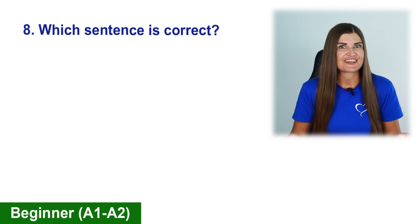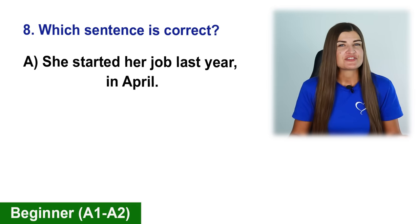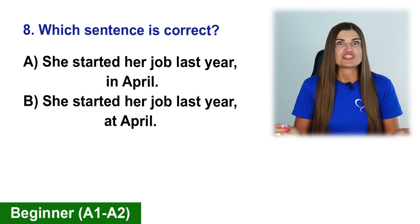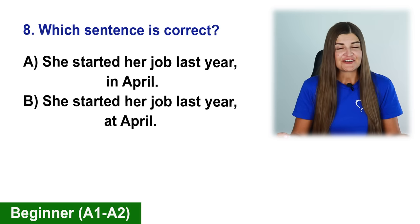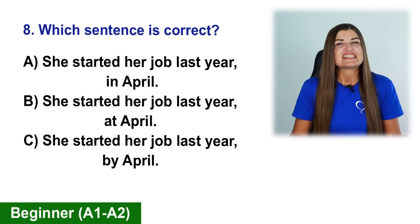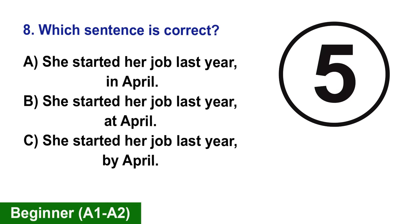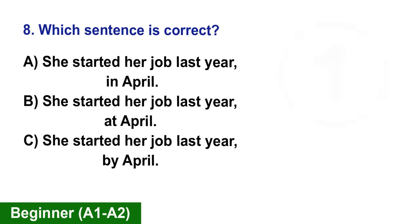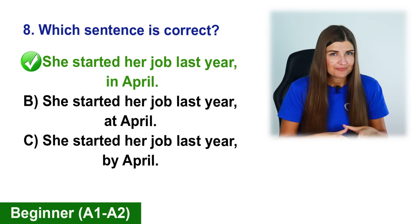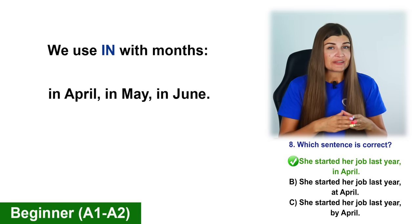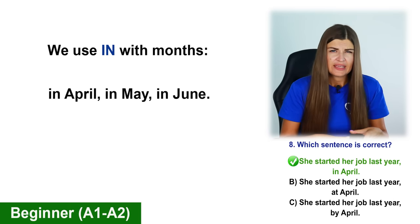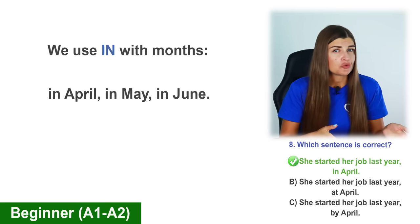Which sentence is correct? A. She started her job last year in April. B. She started her job last year at April. C. She started her job last year by April. The correct option is A. We use the preposition in with months: in April, in May, in June.